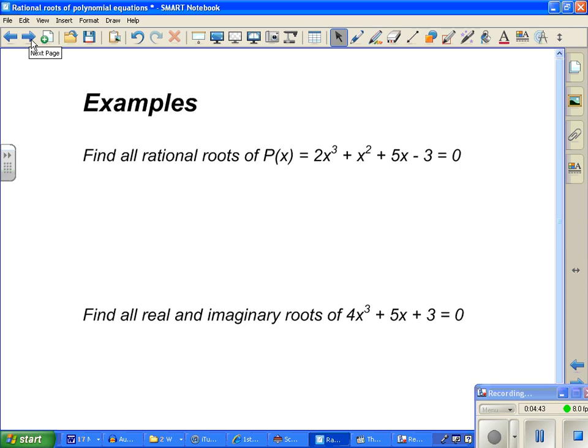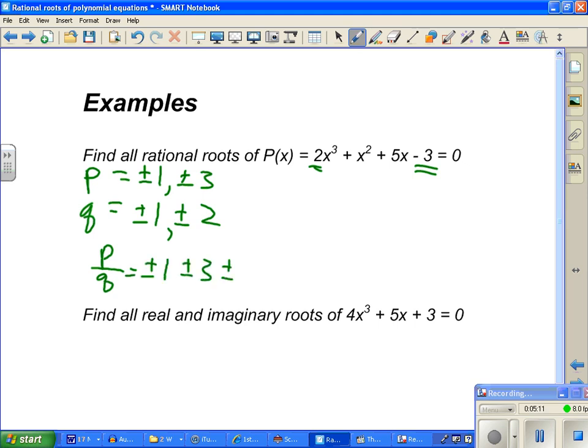Examples. A couple more examples. Let's just go ahead and go through things. P, factors of my constant. Plus or minus 1, plus or minus 3. Q, factors of my leading coefficient. Plus or minus 1, plus or minus 2. So P over Q is plus or minus 1, plus or minus 3, plus or minus 1 half, or 1 half, and plus or minus 3 halves. Those are my options. I've got 8 things I can plug in.